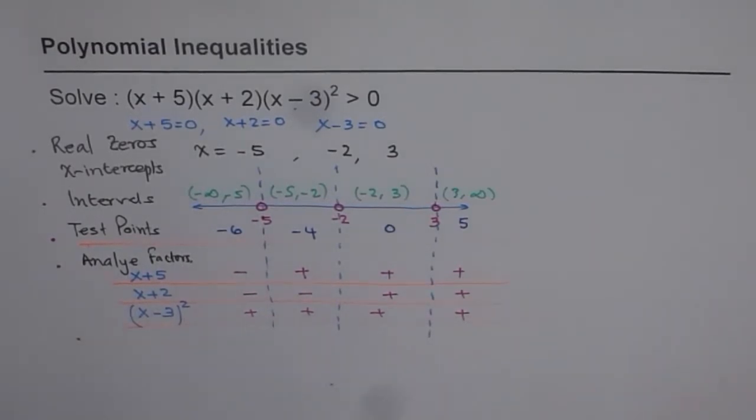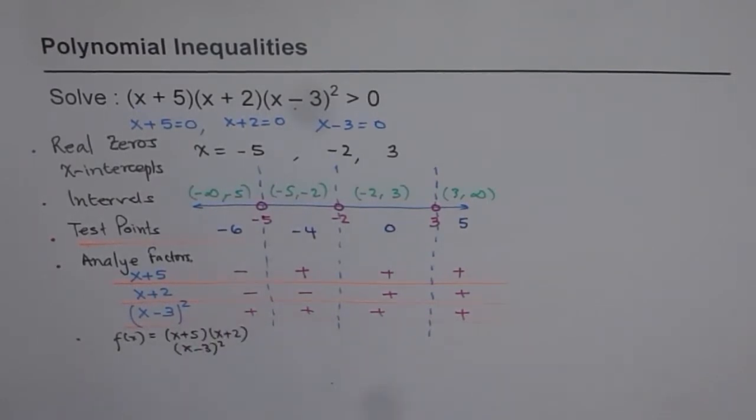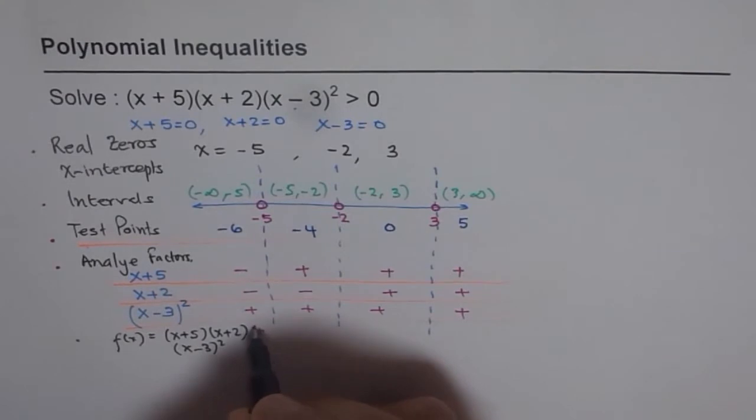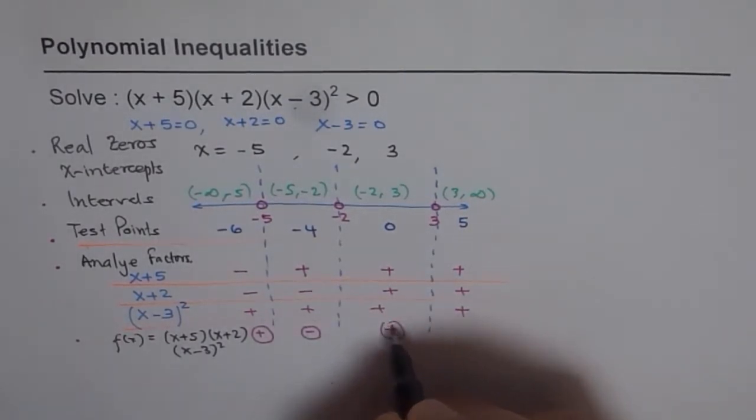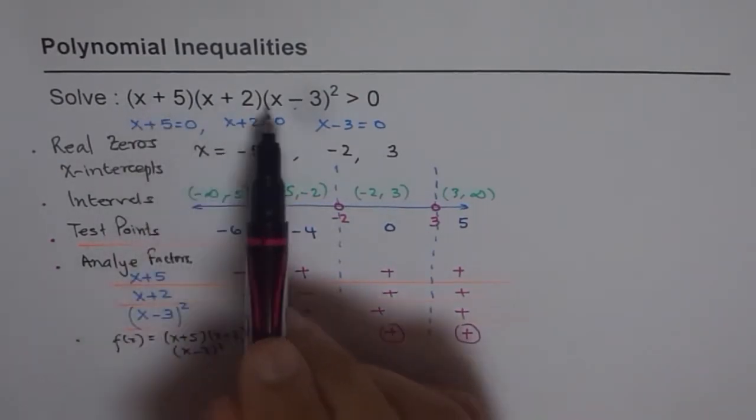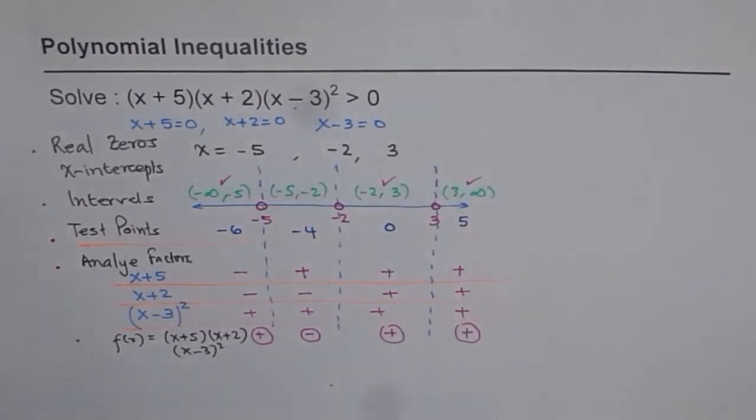And the last step is check the function itself. So the function f of x is basically equal to product of these factors. That is x plus 5 times x plus 2 times x minus 3 whole squared. So when you multiply all of them, you're multiplying these signs. So when you multiply these signs, two negatives will result into a positive. One negative will result into negative. All positives will give you positive. So we get positive signs. It really means that this particular function is going to be positive in these three intervals. This interval, this interval, and that interval. So in these three intervals, we get positive results. That means that is a part of our solution.